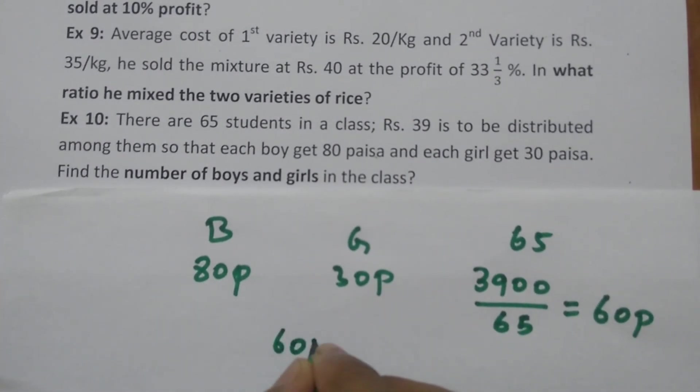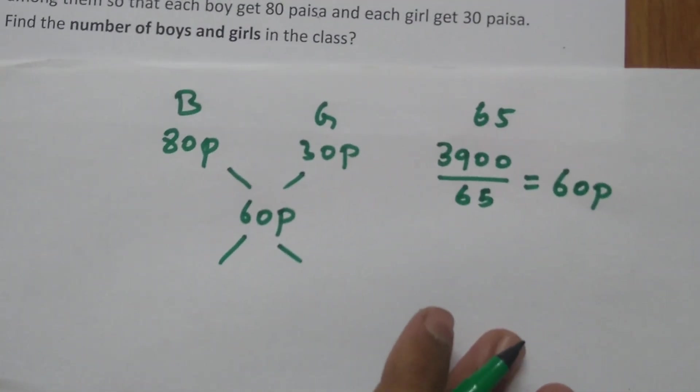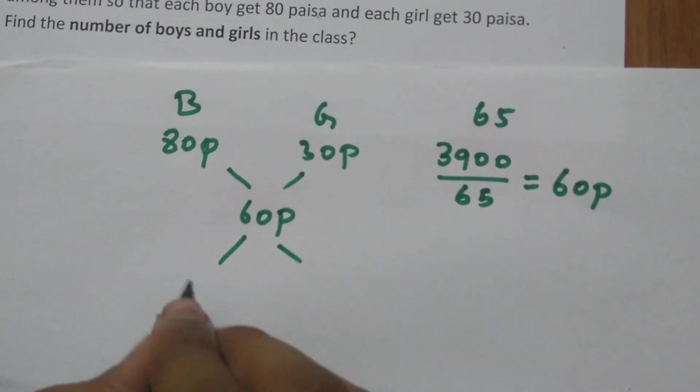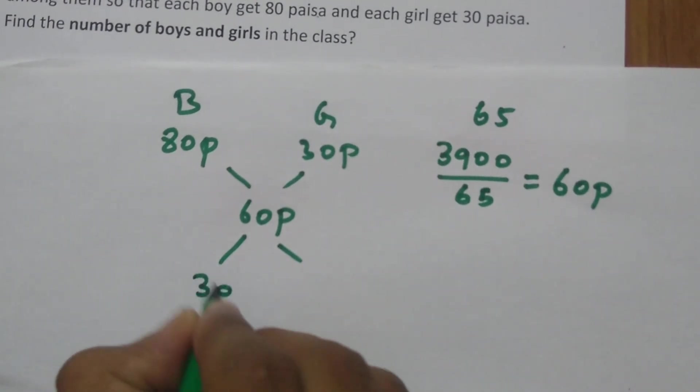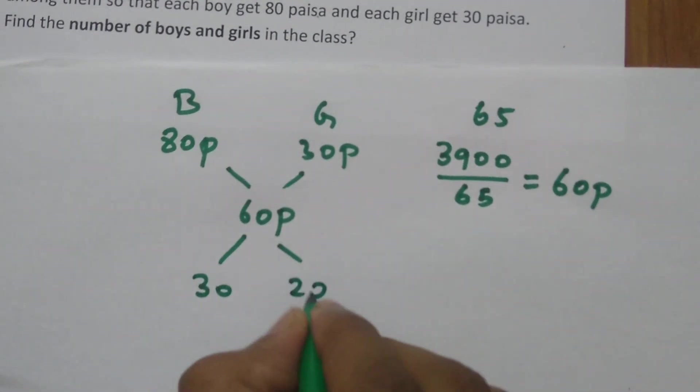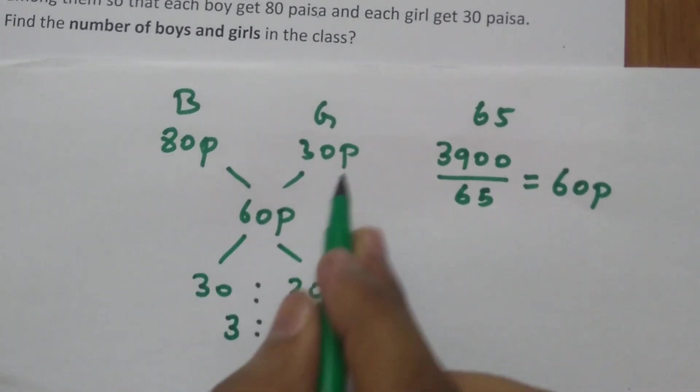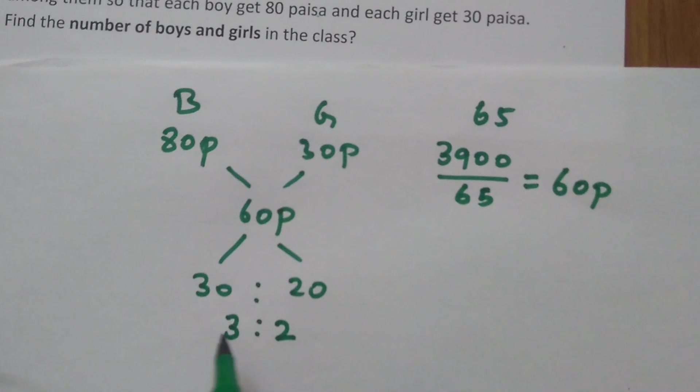So 60 paisa is the weighted average. Now use allegation rule. 60-30=30, 80-60=20. So the ratio of boys and girls is 3:2.